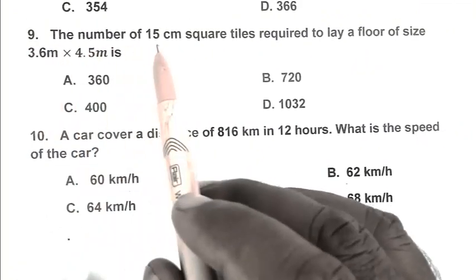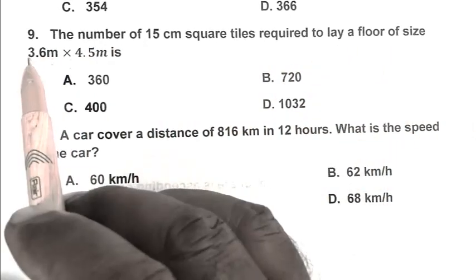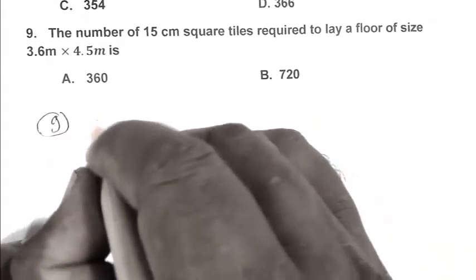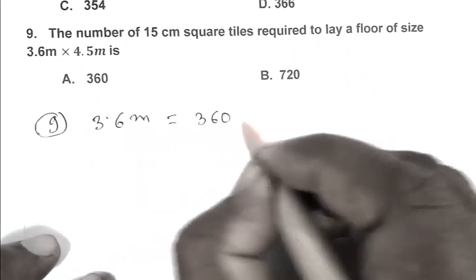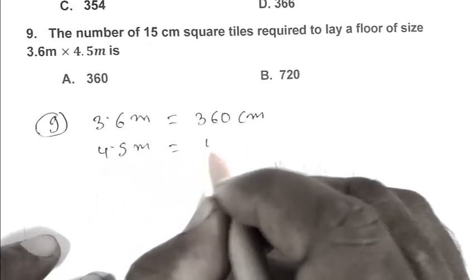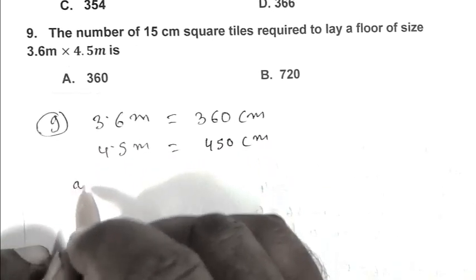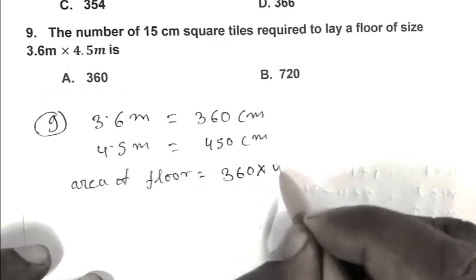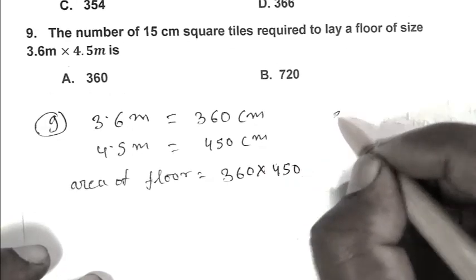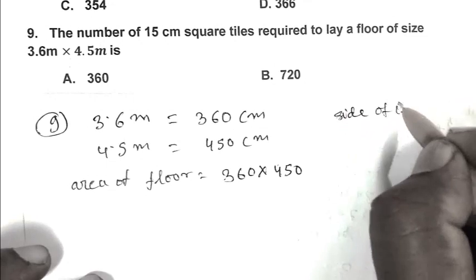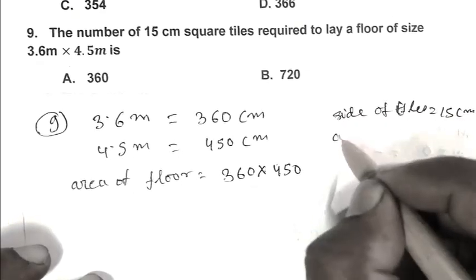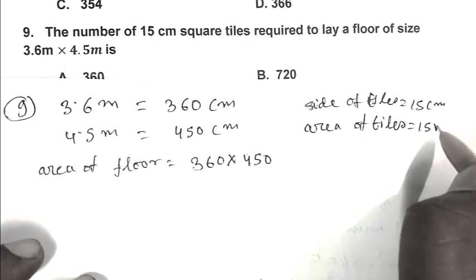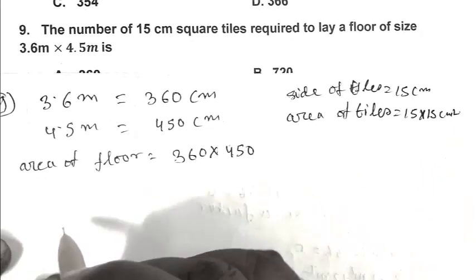Question number 9. The number of 15 centimeter square tiles required to lay a floor of size 3.6 meter by 4.5 meter is? First convert all units: 3.6 meter is 360 centimeter, 4.5 meter is 450 centimeter. Area of floor is 360 times 450. Side of tiles is 15 centimeter.